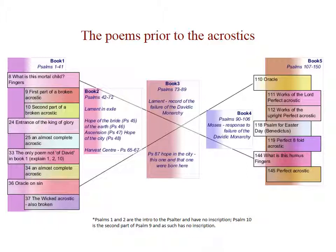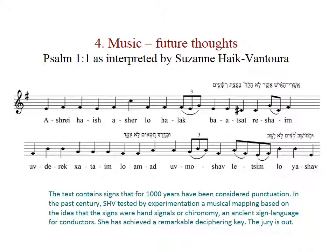The psalms tell the full canonical story of Israel and Judah. Finally, I would like to have a brief look at the music. The text contains signs that, for the last thousand years, have been considered punctuation. In the past century, Suzanne Haig-Ventura tested by experimentation a musical mapping based on the idea that the signs are hand signals, or chironomy — an ancient sign language for conductors. She has achieved a remarkable deciphering key, though there's not a lot of agreement with her theory in the field.